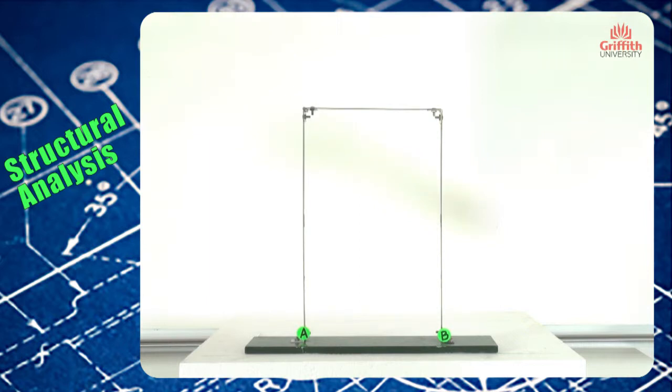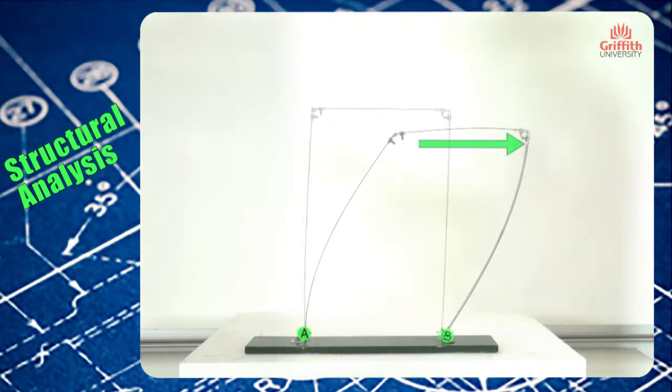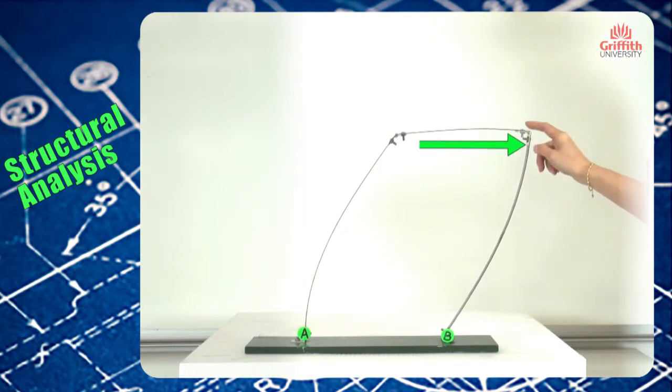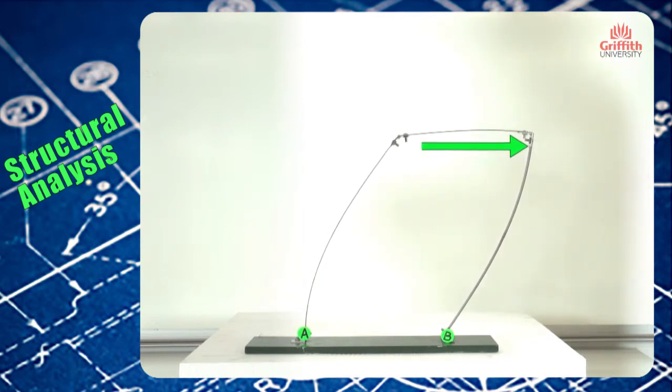Now we apply a horizontal force—one horizontal force is applied at the top corner of this frame. Then the frame would deform into this shape. Now we'll look at each individual component.